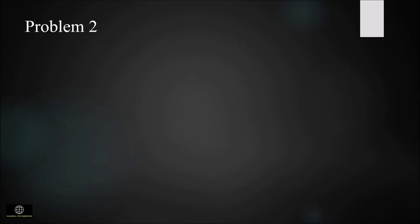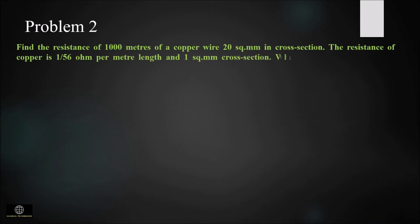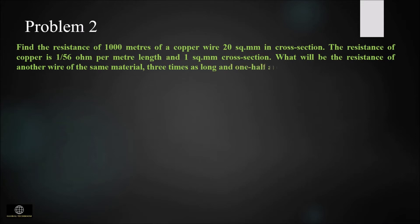In the second problem, find the resistance of 1000 meter of a copper wire which is 20 mm square in cross-section. The resistivity of copper is 1/56 ohm per meter length per 1 mm square cross-section. What will be the resistance of another wire of the same material, 3 times as long and half the area of cross-section?